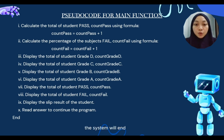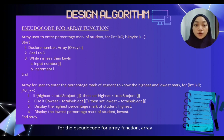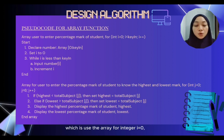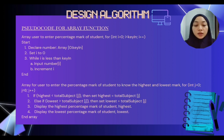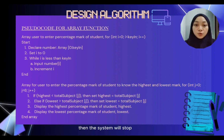Then the system will end. For the pseudocode for the array function, the array is used for the user to enter the percentage mark of students. We use the array: for integer i equals zero, i is less than key in, and i++. The system declares number array zero equal to key in and zero, while i is less than key in, inputs number i, and increments i. Then the system will stop.